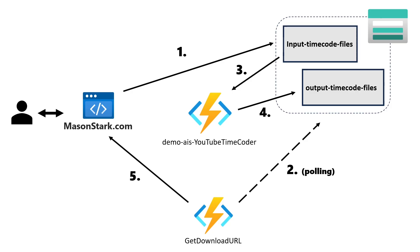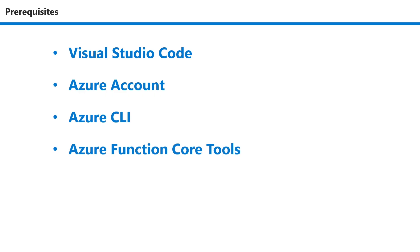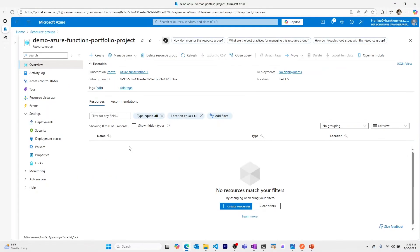Before we get started, you'll need a few things: Visual Studio Code as the editor, an Azure account to create your Azure Storage Account and Azure Function, the Azure CLI for authentication, the Azure Functions Core Tools CLI to create, start, and publish functions to Azure, and Node.js locally if you're creating JavaScript functions. Links to get started with each of these will be in the description.